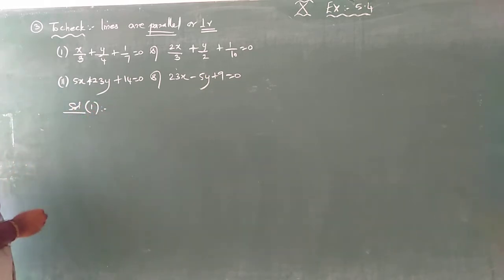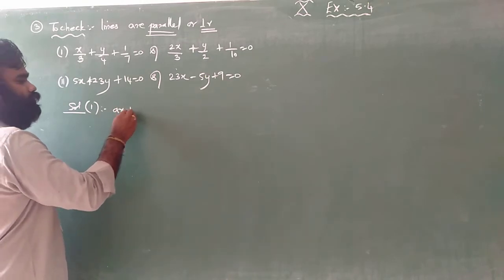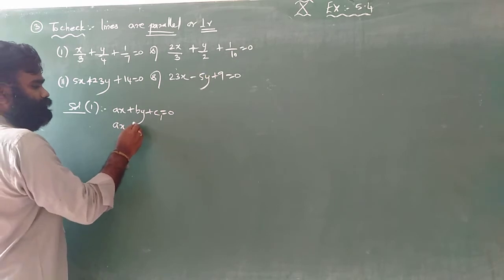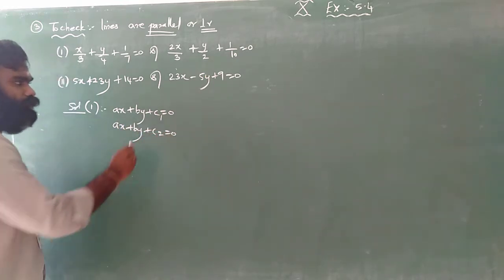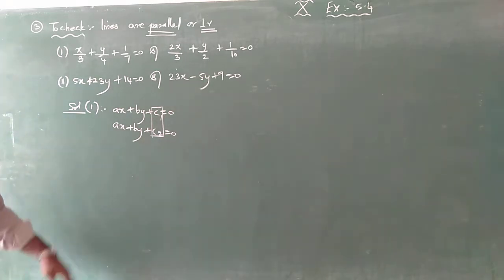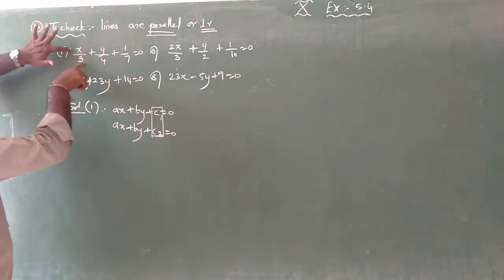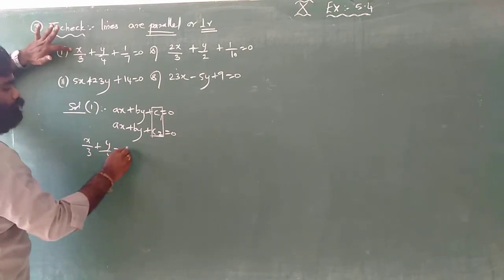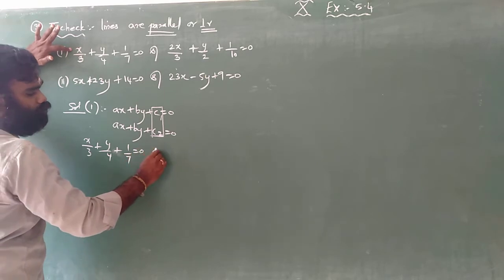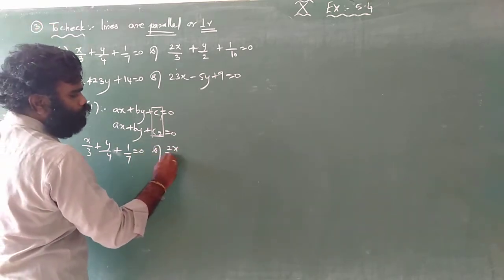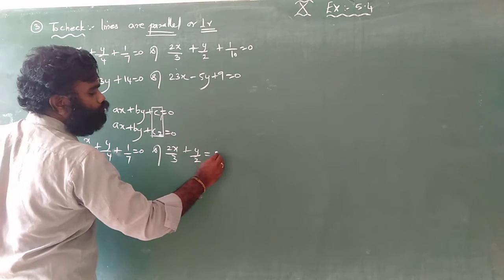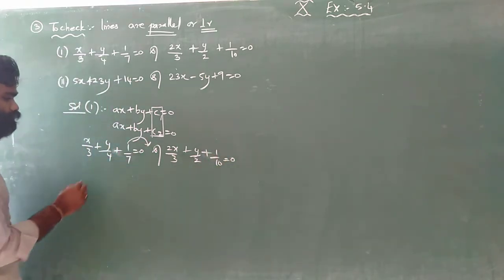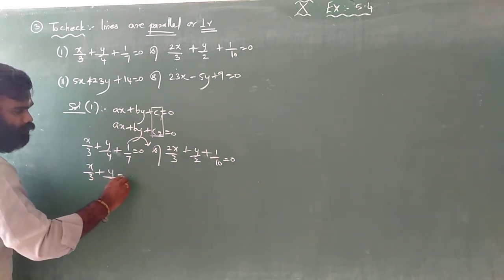For the first subdivision, you know the formula for parallel lines: ax plus by plus c is equal to zero. The first equation is x by 3 plus y by 4 plus 1 by 7 is equal to zero, and the second one is 2x by 3 plus y by 2 plus 1 by 10 is equal to zero.